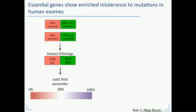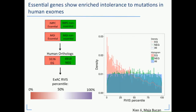We asked: when we compare human orthologs of essential and non-essential genes, do we see any enrichment of essential genes among those showing genic intolerance in humans? The answer may not be surprising, but the degree of enrichment was quite striking. Essential genes score very low in the RVIS overall percentile, meaning mutations in our essential genes are not tolerated in humans at all.